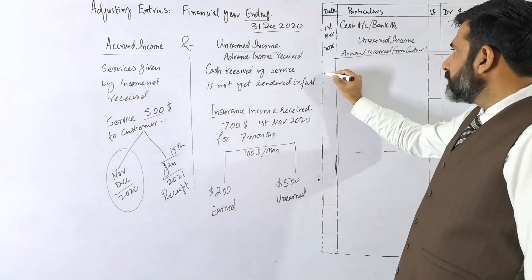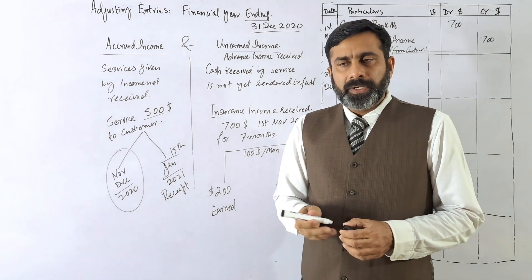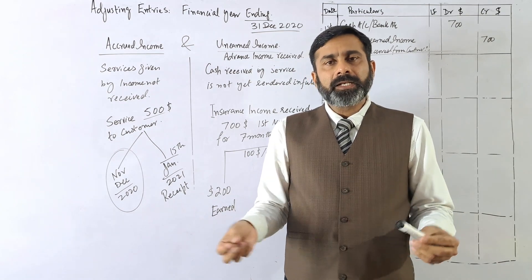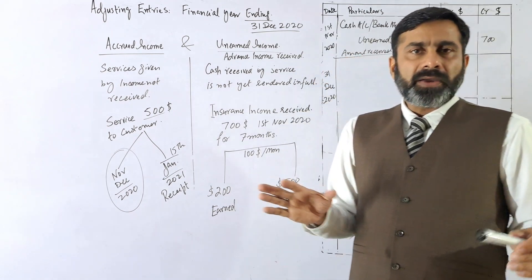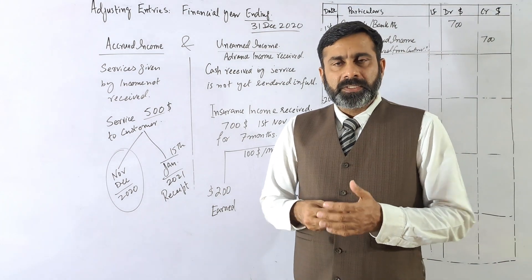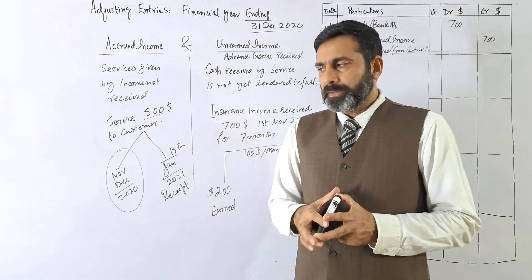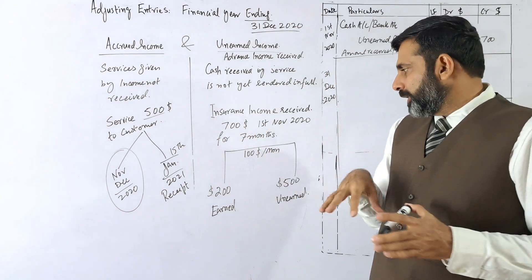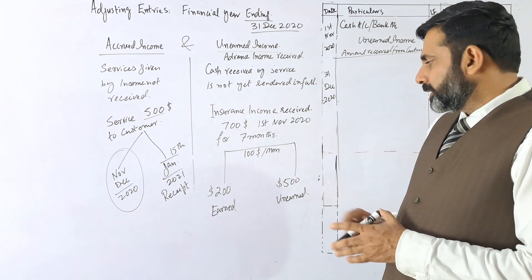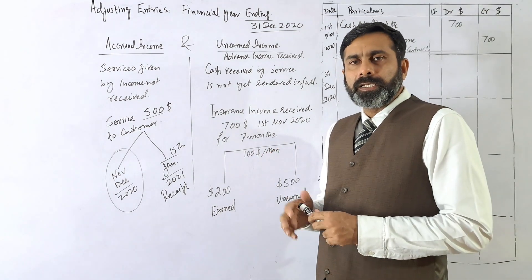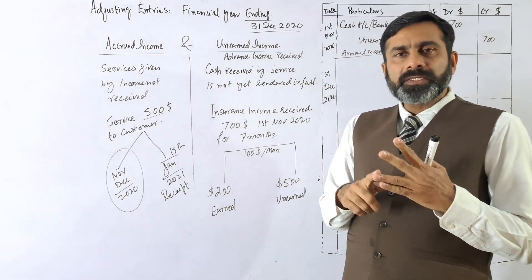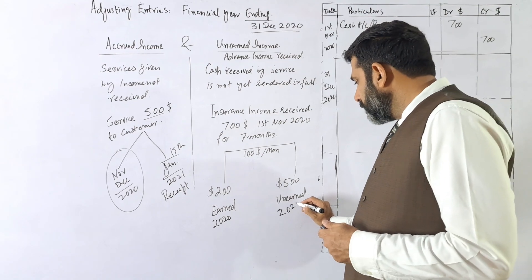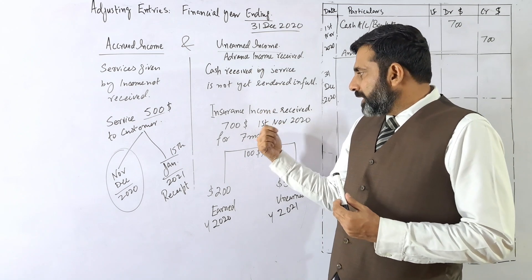On the 1st of November, the whole amount is received in advance, so it is written as unearned income — amount received from the customer for seven months. On the 31st of December 2020, you must prepare your financial statements showing income, expenses, receivables, and payables. You need to segregate how much is income for the current year 2020 and how much is income for the next year.